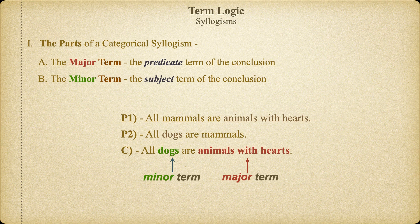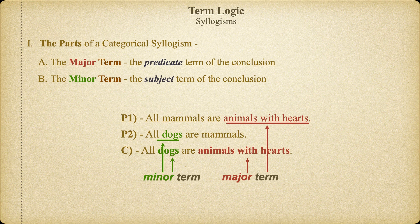It is essential to learn that the subject of the conclusion is the minor term and the predicate of the conclusion is the major term, because these terms are going to control the order of the premises in a categorical syllogism. So we always want to start with the conclusion, identify the subject and the predicate—the subject is the minor term, the predicate is the major term. Notice that the major term is located in premise one, while the minor term is located in premise two. The proposition that contains the major term will always be the first premise of the argument.